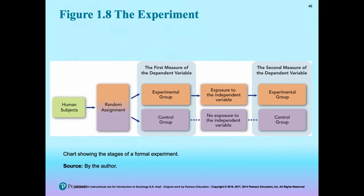A formal experiment must have specific stages, and each stage has to be deployed independently with both the control and the experimental group. The big difference is the exposure to the independent variable — the control group is not exposed, while the experimental group is.